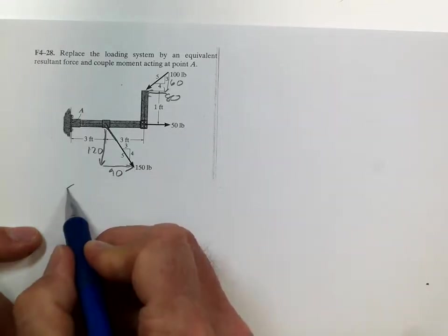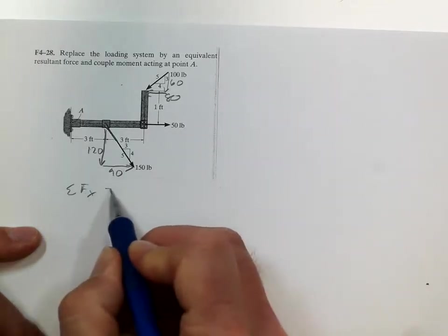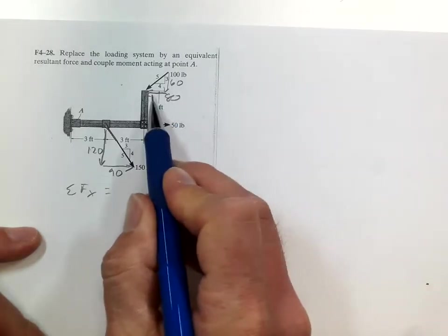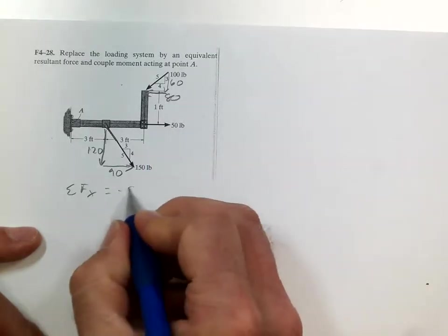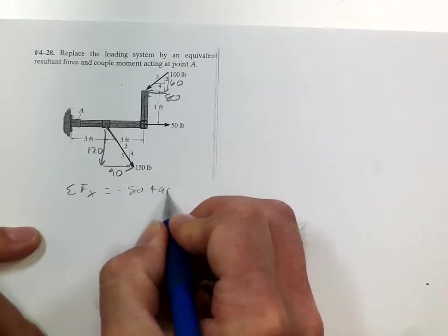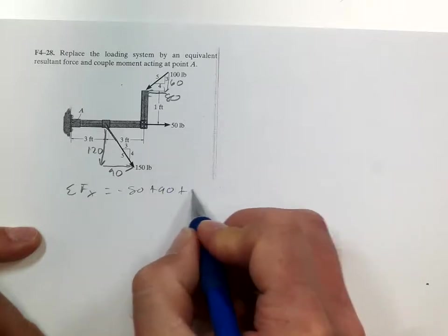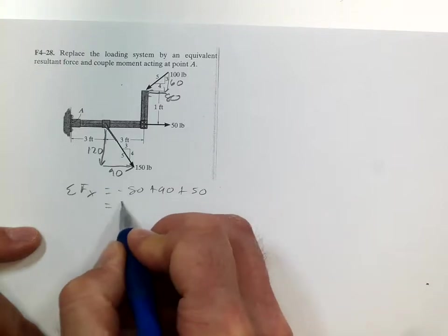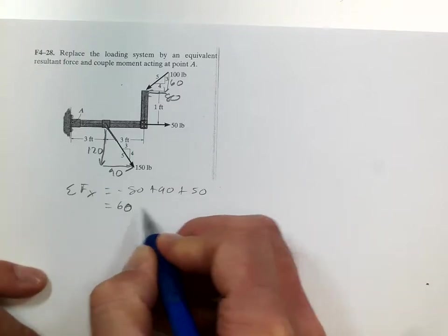So summing the forces in the x components, we have negative 80 plus 90 plus 50. The result is 60 pounds.